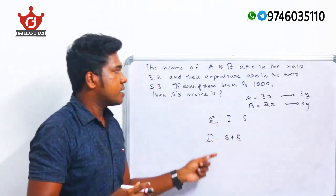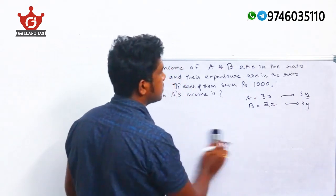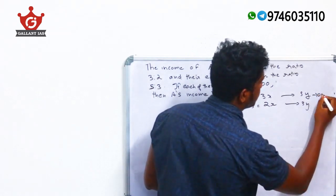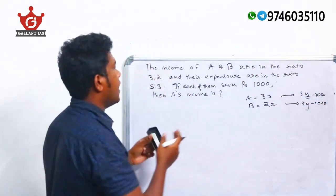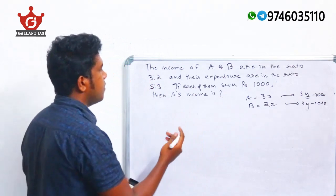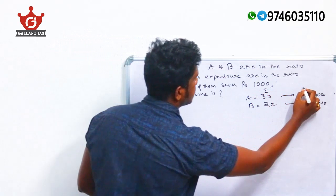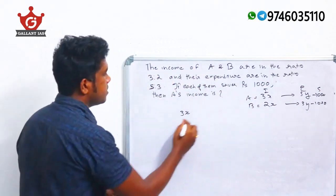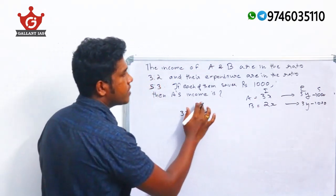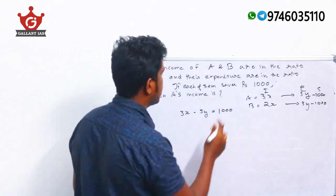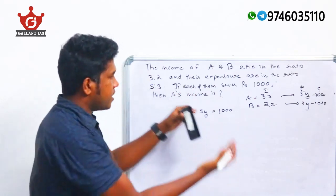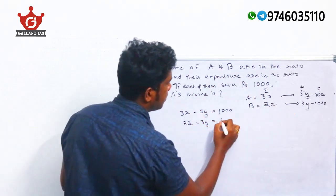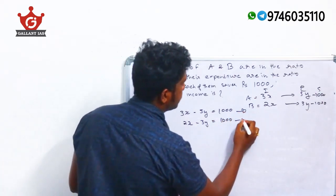Both A and B save ₹1000. For A: 3X − 5Y = 1000 (equation 1). For B: 2X − 3Y = 1000 (equation 2). We need to solve these two equations to find X, and then compute A's income as 3X.